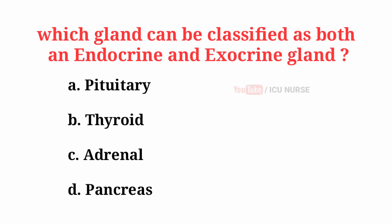Which gland can be classified as both an endocrine and exocrine gland? The correct answer is D: Pancreas.